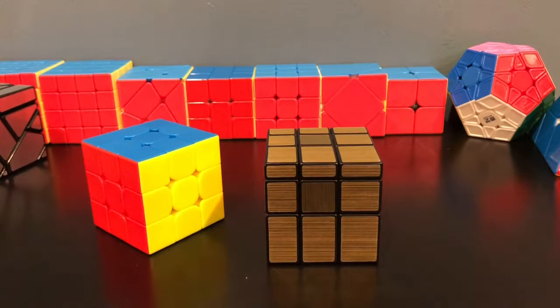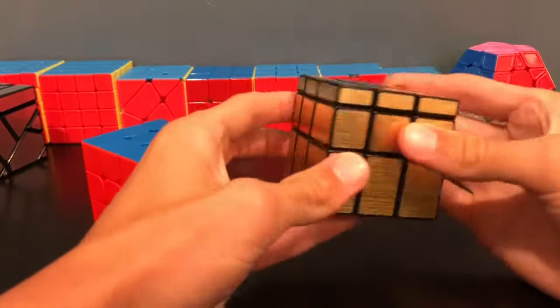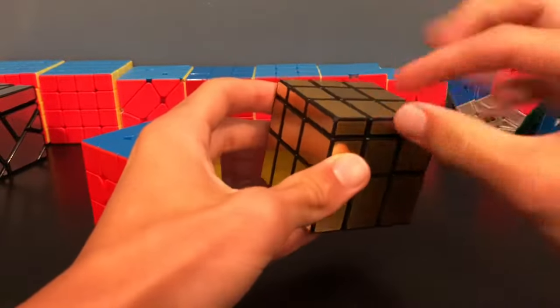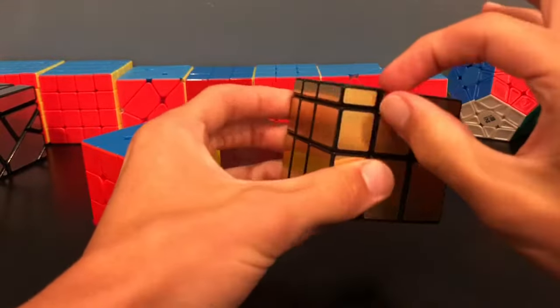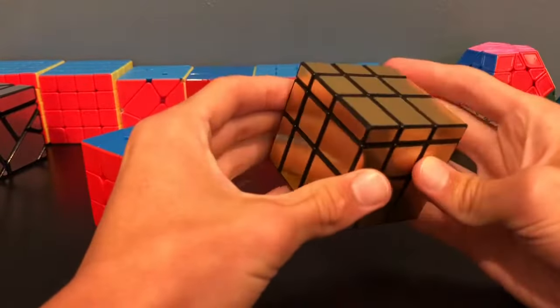Since the mirror cube is all one color, we're going to solve it based on the shapes of the pieces rather than looking for colors. So what I like to do is I like to pretend that this thinnest side is the white side, and I usually start with these pieces. I do this because on the mirror cube there's no other pieces that are quite as thin as these, so they're quite easy to spot.